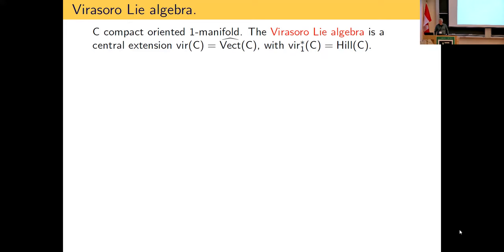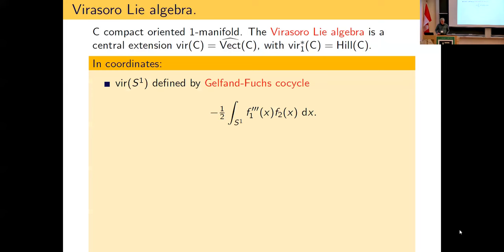Rather than using abstract terms, you can also just write it out in formulas. If you introduce coordinates so your circle is just S¹, then the central extension is defined by the Gelfand–Fuchs cocycle, given by a formula involving a third derivative.